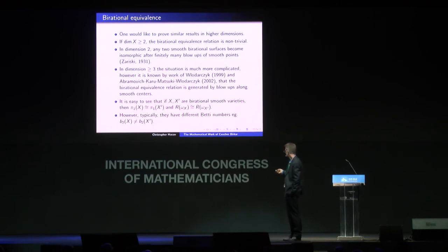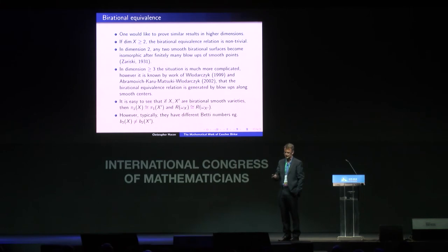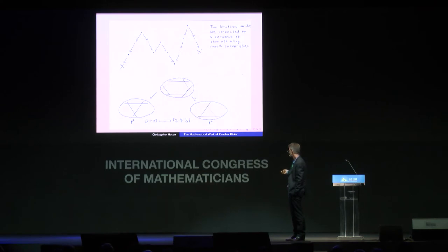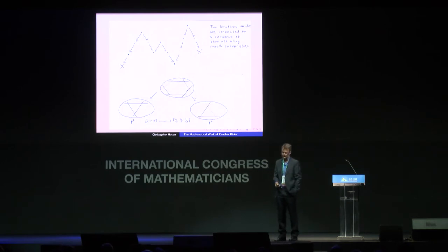Birational varieties share many common properties — for example, they have isomorphic canonical rings and isomorphic fundamental groups — but they may have quite different topologies. Here's a specific example of a birational map from projective space to itself: it sends [x:y:z] to [1/x : 1/y : 1/z]. Geometrically, this corresponds to blowing up the three points at the intersection of the three coordinate lines, and then blowing down these coordinate lines on the other side.